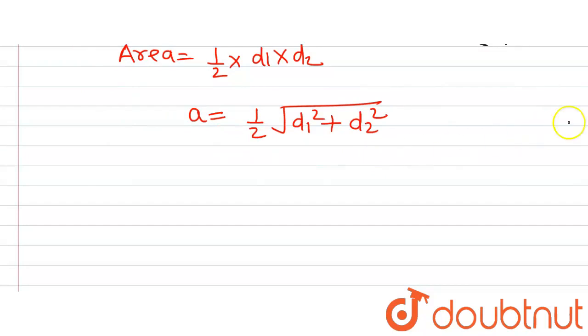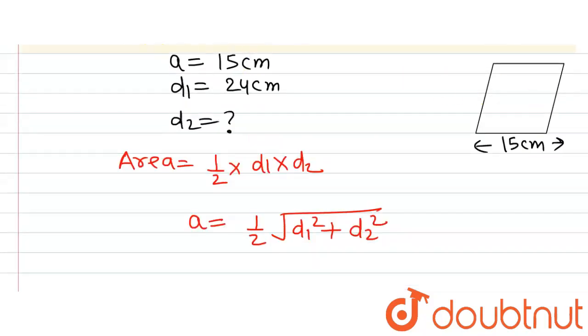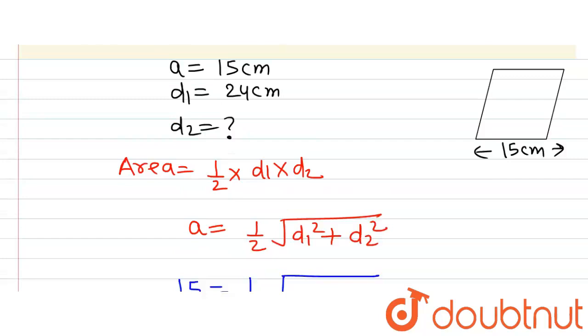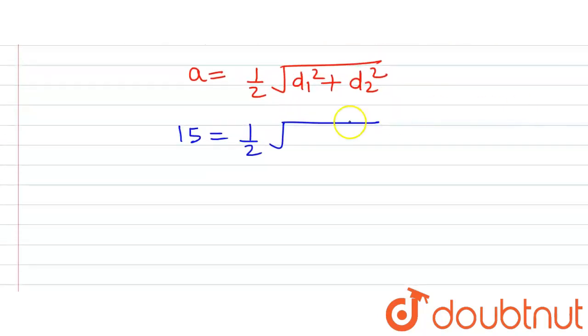Now let's put in the values. A is 15 centimeters, so 15 equals one half times the square root of D1 squared plus D2 squared. The length of D1 is 24, so 24 raised to the power 2 plus D2 raised to the power 2.